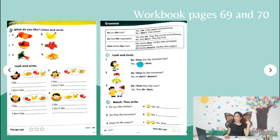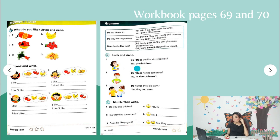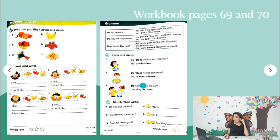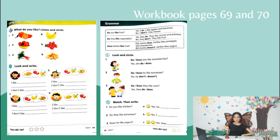Activity 8: Look and circle 'do' or 'does.' 'She likes strawberries' — look at the picture. You're going to circle 'do' or 'does,' and then the answer says 'Yes, she does.' Circle the one that is the correct answer. Activity 7: 'Do or does he like tomatoes?' Is it 'do' or 'does'? 'No, he doesn't.' The two options are divided by a slash — circle the correct one.